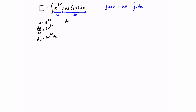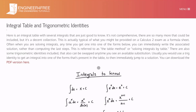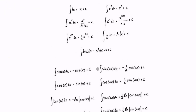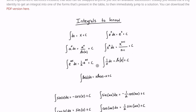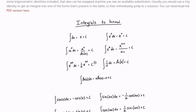For dv, we've defined it to be cos of 2x dx, and we want to take the integral of dv. So that's the integral of cos of 2x dx, which will give us v. We need to look up the integral of cos of 2x dx. If you don't have it memorized, you can go to an integral table — there's one on the Engineer for Free website, linked in the description. You'll likely have something similar available on your exam.